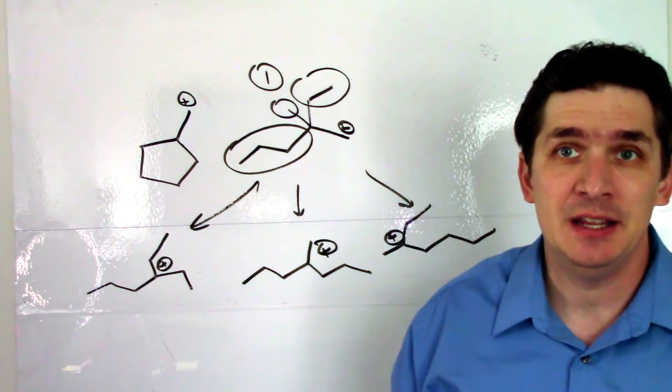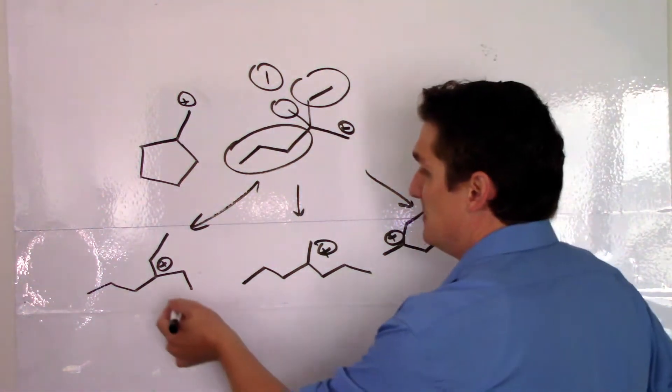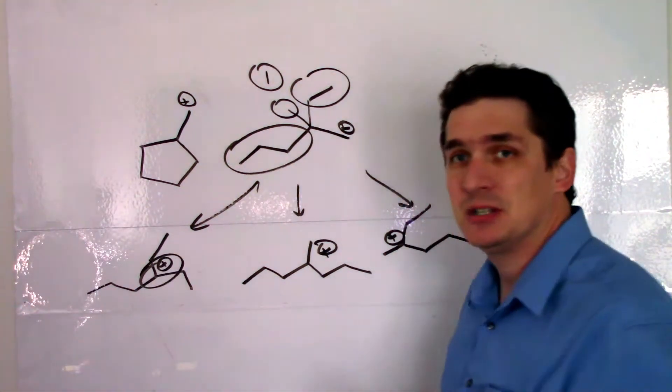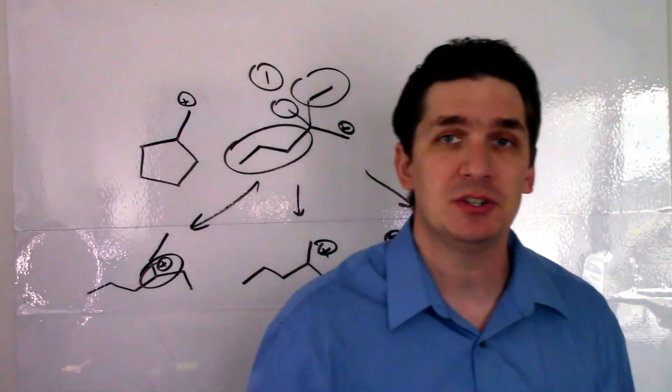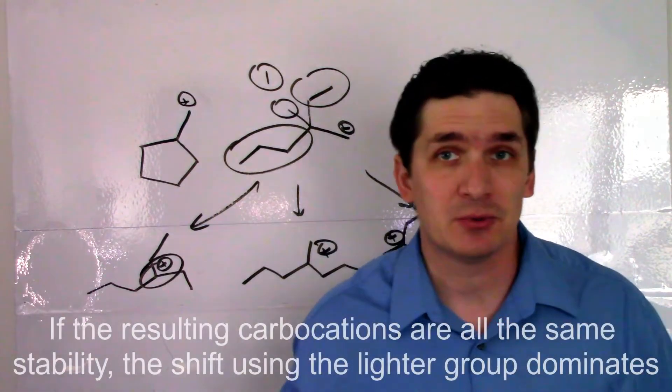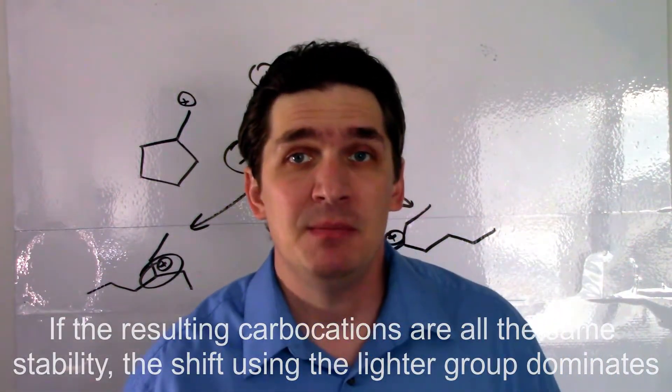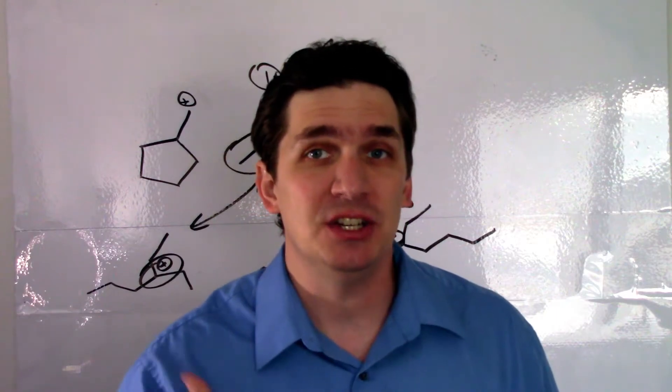But the one that's going to predominate here is the methyl group - this methyl shift. And the reason this can predominate is not that it ends up generating any more or less stable carbocation. These are all tertiary carbocations. It's just that the methyl group weighs a lot less, and because it weighs a lot less it can shift faster.